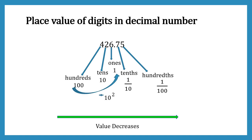Going two places to the right, the place value decreases by 10's power 2, and so on. Have you wondered why this is happening? Remember in my initial explanation I said the decimal number is a base 10 number system. That's why 10 is so important — the place value of digits changes in powers of 10.